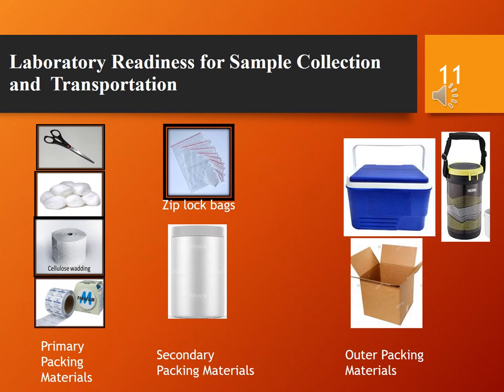Laboratory readiness for sample collection and transportation is important. Primary packing materials such as tissue paper, tape, and paraffin are required. Secondary packing materials, namely a large leak-proof secondary container such as a zip lock bag, must be present. Outer packing materials such as a thermocooler box or ice box with a hard board box are required.